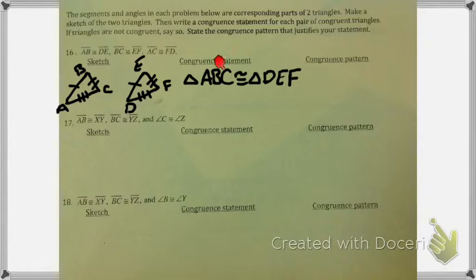So the order in which I write this second one is absolutely a necessity. Because of the way it's written, I know that angle A and angle D are congruent, B and E are congruent, angle C and angle F are congruent.